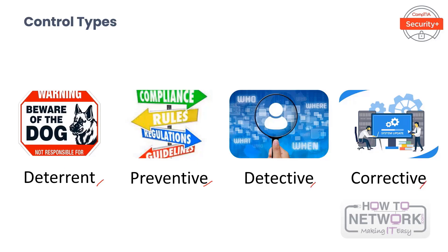Consider the importance of having both detection controls and prevention controls. In a perfect world, we would need only prevention controls. Unfortunately, not all malicious activity can be prevented. As a result, it is important to make detection controls part of a layered security approach. For example, the best protected banks use both detective and preventive controls — in addition to locks, bars, and security signs, the bank probably has motion detectors and cash register audits. Controls work together as a security system and provide layered defense mechanisms for defense in depth.